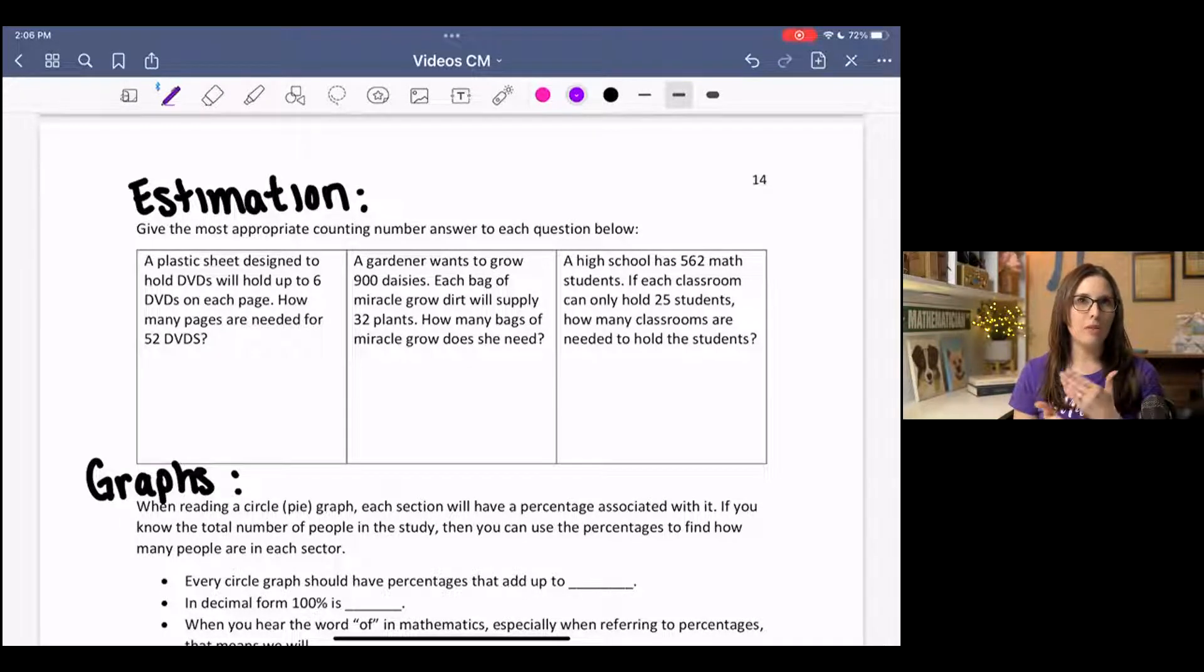Now you might think, well, I'll just take 52 and divide it by 6, but it doesn't divide evenly. So you can get a roundabout idea if you either round up after you divide or you can take multiplication and look at it that way.